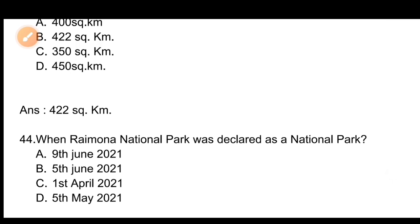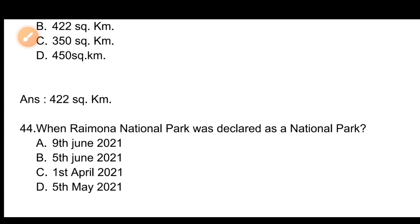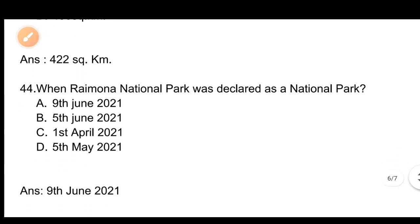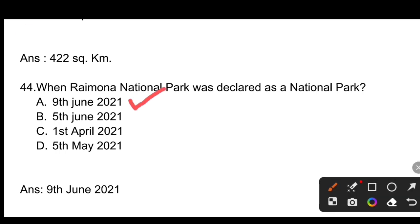Question number 44: When was Raimona National Park declared as a National Park? Options: 1) 9 June 2021, 2) 5 June 2021, 3) 1st April 2021, 4) 5 May 2021. The correct answer is 9 June 2021. Raimona National Park was declared as a National Park on 9 June 2021.